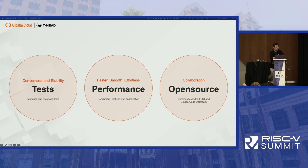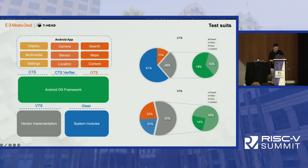As I mentioned in the first slides, we have three things we want to highlight: tests, performance optimization, and open source. We'll go through them one by one.